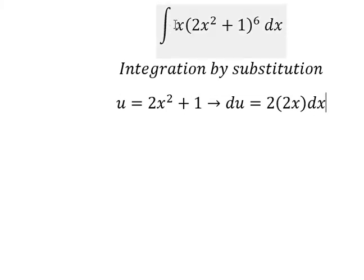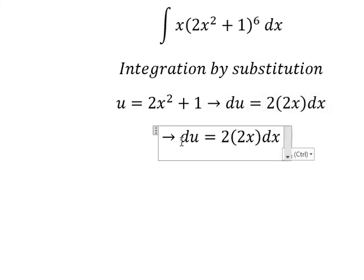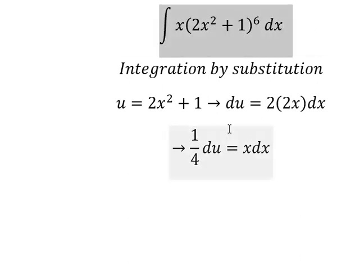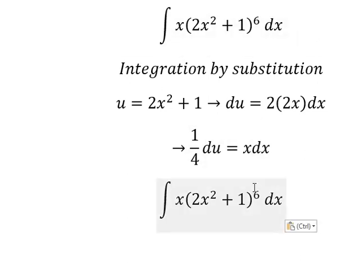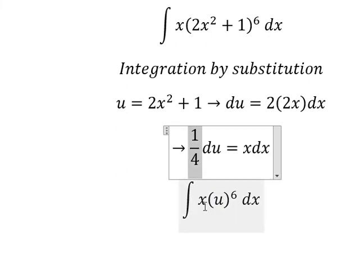We have du = 4x dx. We need to divide both sides by 4, so 1/4 du = x dx. Now we change the integral: x dx becomes 1/4 du, and we have 1/4 times the integral of u⁶ du.